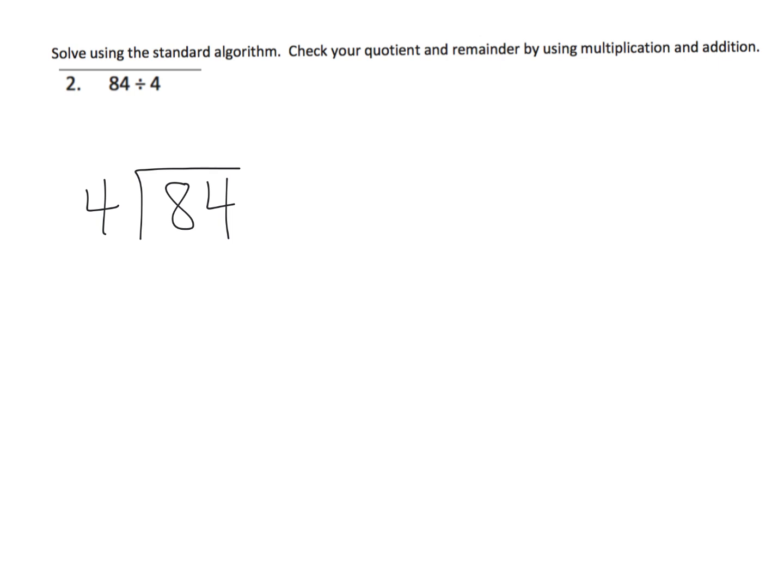So the idea would be, as we're going through the standard algorithm, we are referring back to the place value disks. And so if students need to continue using the place value charts and the place value disks, by all means, let your students do that. So the first thing we're going to do is we're going to imagine what this would look like. Well, it would look like 8 dots in the tens column, 4 dots in the ones column.